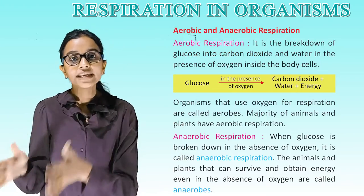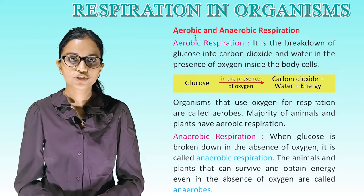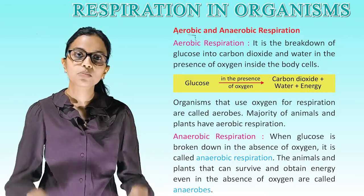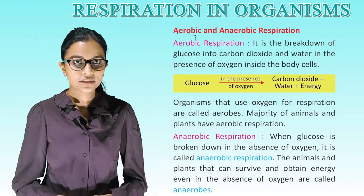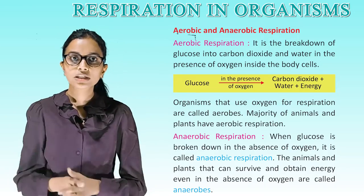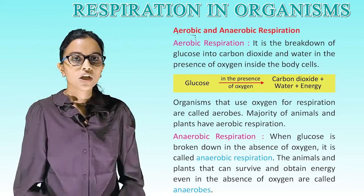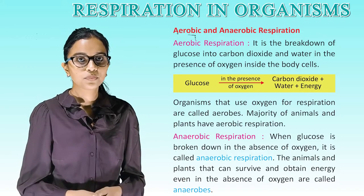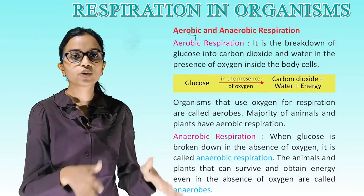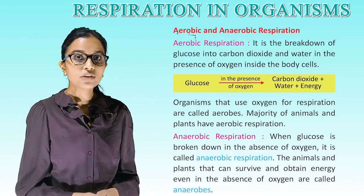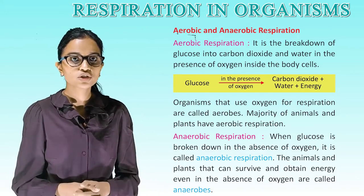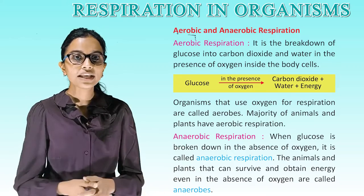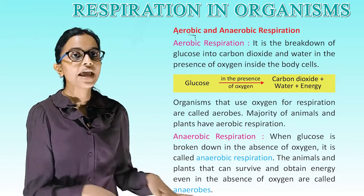Aerobic and anaerobic respiration. Aerobic respiration is the breakdown of glucose into carbon dioxide and water in the presence of oxygen inside the body cells. The equation is: glucose + oxygen → carbon dioxide + water + energy. Organisms that use oxygen for respiration are called aerobes. Majority of animals and plants have aerobic respiration. When glucose is broken down in the absence of oxygen, it is called anaerobic respiration. Animals and plants that can survive and obtain energy even in the absence of oxygen are called anaerobes.